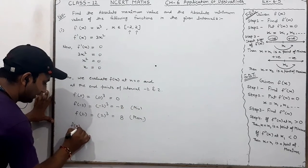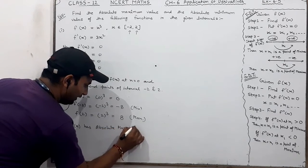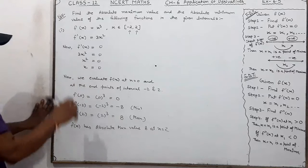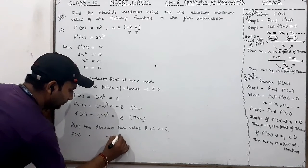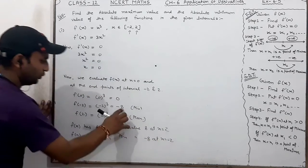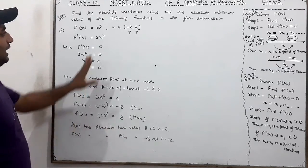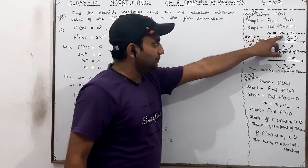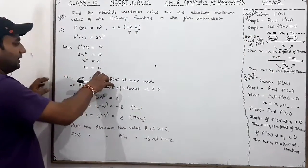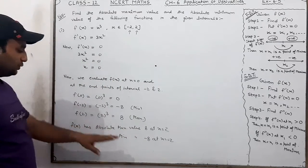So f(x) has absolute maximum value 8 at x = 2, and f(x) has absolute minimum value −8 at x = −2. To summarize the method: we find critical points, then we find the function values at the critical points and the endpoints, and check which function value is the maximum — that is the absolute maximum — and which is the minimum — that is the absolute minimum.